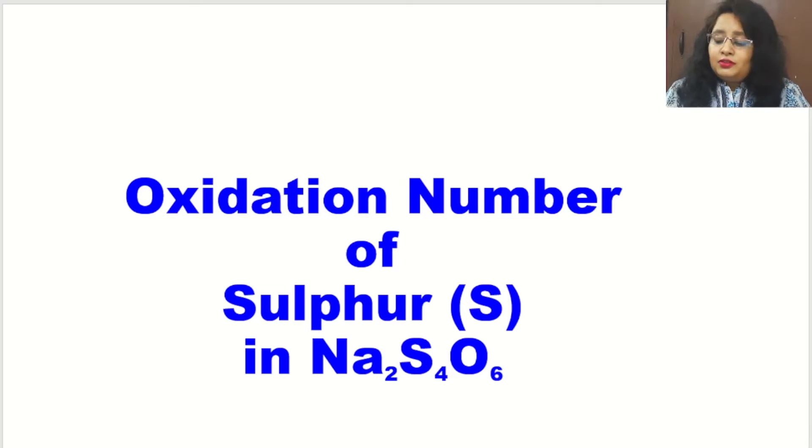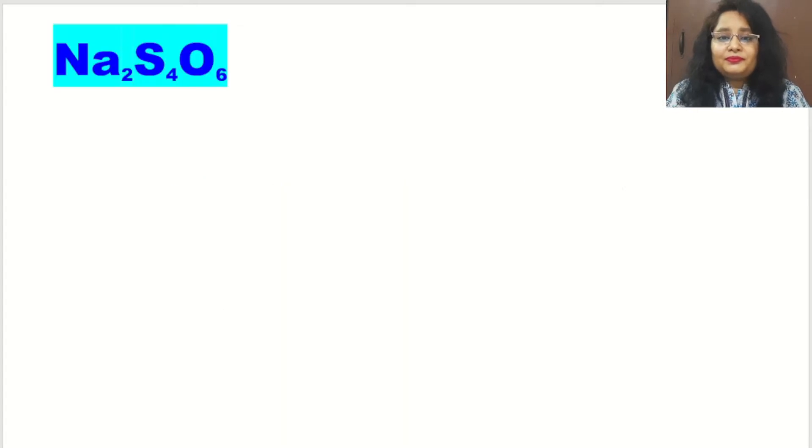So let's start. Na₂S₄O₆, as we should know and remember this: if we calculate the oxidation number of sulfur by the normal formula we will get the wrong answer. Why? Because whatever the answer we get, that is called the average oxidation number.